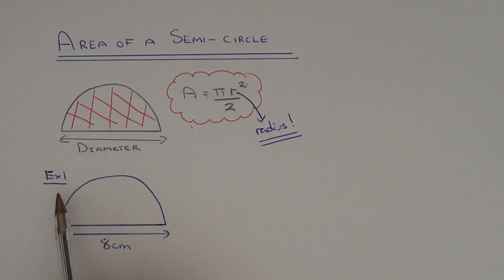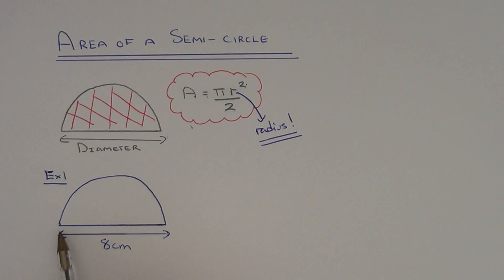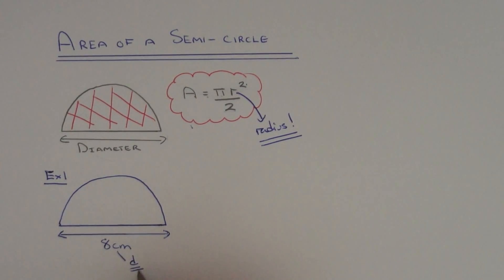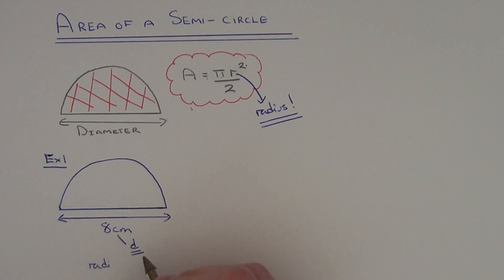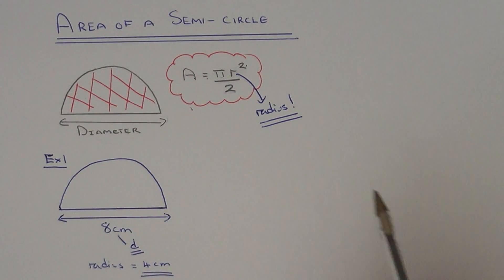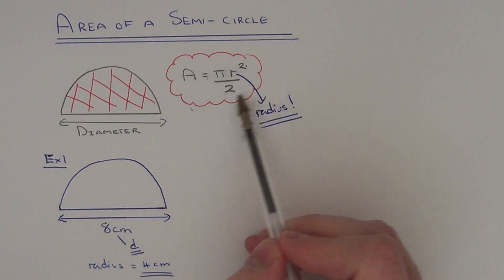Let's look at example 1. We have a semicircle with a diameter of 8 centimetres. First we need to halve 8 centimetres to get the radius of the circle. So our radius is 4 centimetres, which is our value of r to substitute into the formula.